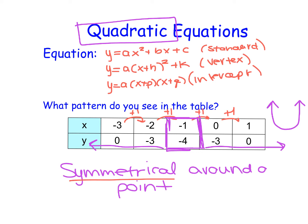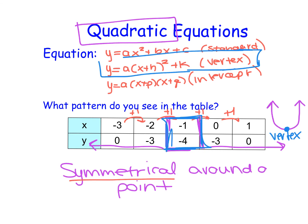What I notice is that this middle point is what's called my vertex. If I can see what that middle point of symmetry really is, that's my vertex point. In this case, I'm going to choose to write this equation into vertex form.